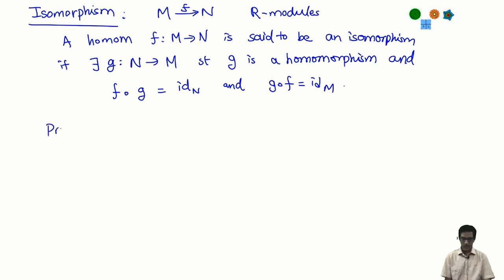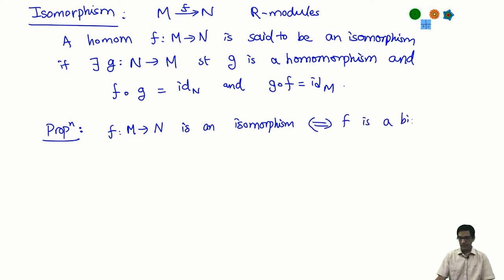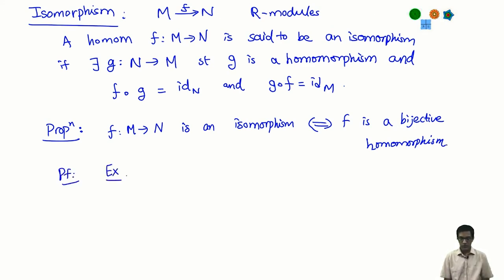Here is a little proposition which makes it easy to check that a given map is an isomorphism. You do not really need to look for a homomorphism G in the opposite direction. The proposition is: F from M to N is an isomorphism if and only if F is a bijective homomorphism — bijective just means it is a one-to-one and onto map of sets.